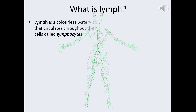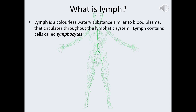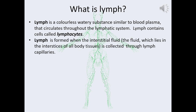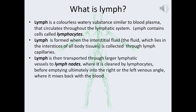What is lymph? Lymph is a colorless, watery substance, similar to blood plasma, that circulates throughout the lymphatic system. Lymph contains cells called lymphocytes. Lymph is formed when the interstitial fluid — the fluid which lies in the interstitials of all body tissues — is collected through lymph capillaries. Lymph is then transported through larger lymphatic vessels to lymph nodes, where it is cleaned by lymphocytes, before emptying ultimately into the right or the left venous angle where it mixes back with the blood.